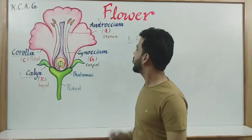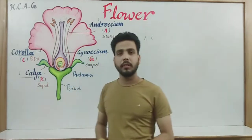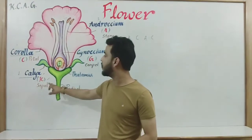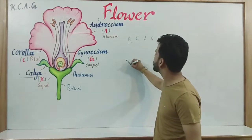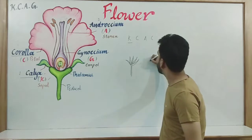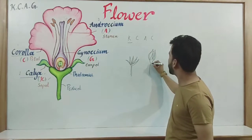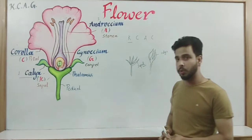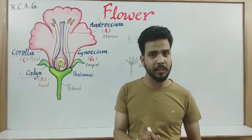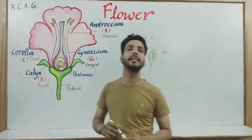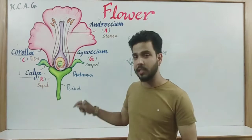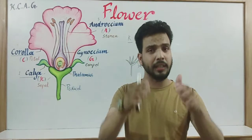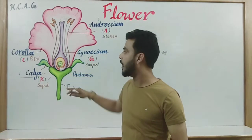Starting with K — K for Calyx. The outermost whorl of a flower is termed as calyx, represented by capital K. The single unit of calyx is known as sepal. Generally calyx are green in color, as seen in the case of rose in this diagram. The function of calyx is to protect the flower during the bud stage — the internal parts are protected with the help of calyx.